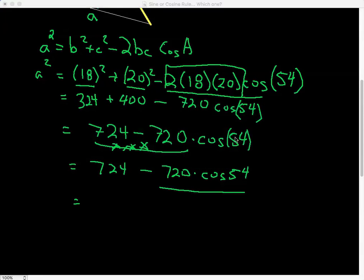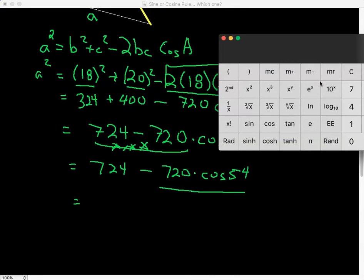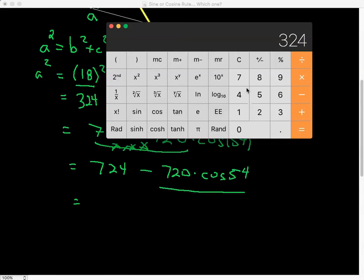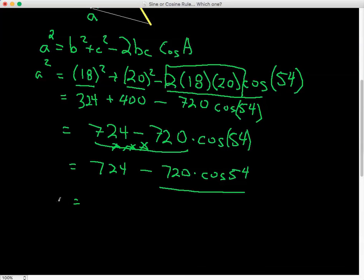So if we do that in our calculator, we have 720 times 54 degrees cos equals, and now we need to do 724 minus this number. So if I go 724 minus 453, and usually we have all the decimals, we have 271. So a squared is equal to 271.